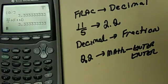Again, if you want to change a fraction to a decimal, you just input the fraction and hit enter, and that will return you a decimal. If you want to change a decimal to a fraction, you put in the decimal and you hit math, enter, enter, and that will change your decimal into a fraction.